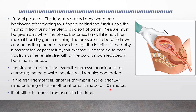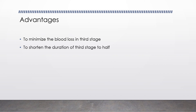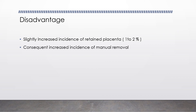The goal is to make the uterus contract and become hard in order to minimize blood loss in the third stage. Active management helps avoid blood loss within 15 minutes. However, a disadvantage of active management is an increased incidence of manual removal of the placenta.